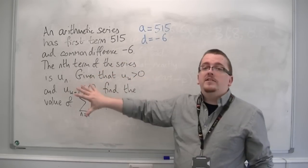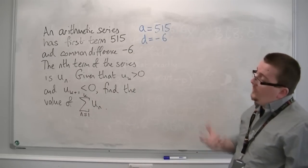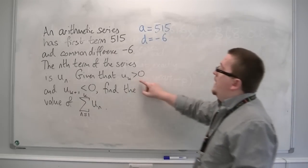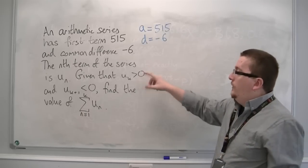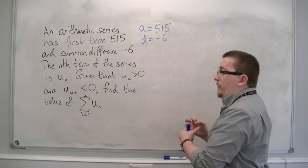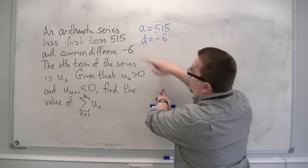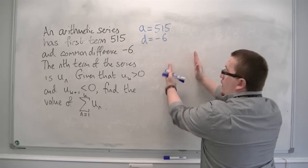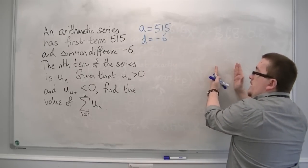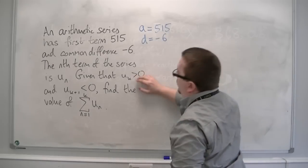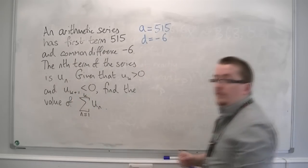Now, this last sentence looks very confusing, but what it's saying is that at some point this series has a last value that is positive, and then its next value is negative. Because we're subtracting 6 each time, we'll have a last positive entry, and then the next term will be negative. So that's why we're saying that u_k is greater than 0 and u_(k+1) is less than 0.